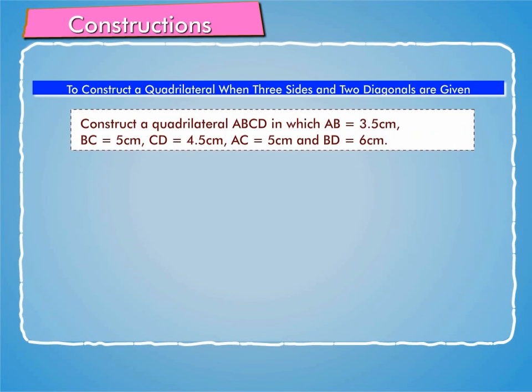Let us construct a quadrilateral ABCD in which AB is equal to 3.5 cm, BC is equal to 5 cm, CD is equal to 4.5 cm, AC is equal to 5 cm and BD is equal to 6 cm.